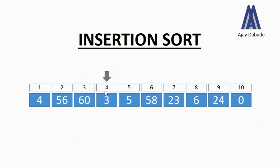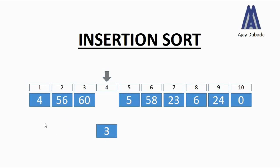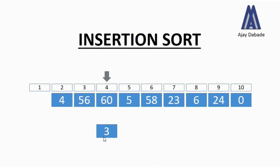We shift the pointer to the next position, that is the fourth position, where we have the number 3. We take this number and compare it with the numbers at the left-hand side — with 60, 56, and 4. All three numbers are greater than 3, so we shift all of them one position to the right. Every number has been shifted one position towards the right, and we place the number 3 at position one.